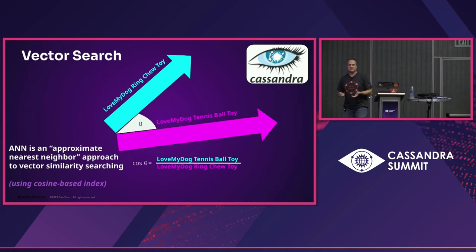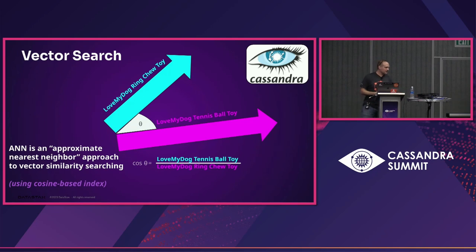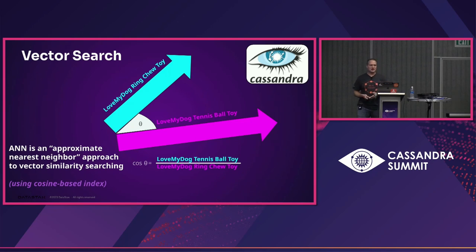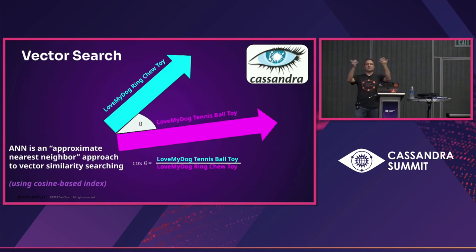For vector search generally, once you have certain strings — in this case, names of products for a pet supply website — like 'love my dog ring chew toy' and 'love my dog tennis ball toy,' you can do an approximate nearest neighbor based on one of those vectors and it'll have an understanding of how close it is approximately to the other. I always like to show new people this slide because wrapping your head around it in two-dimensional space is easier than trying to wrap your head around it in 1,536-dimensional space.